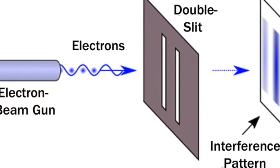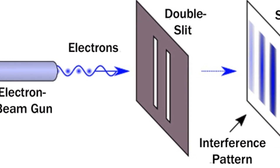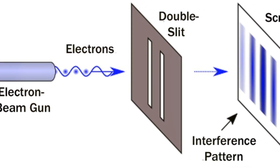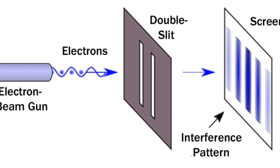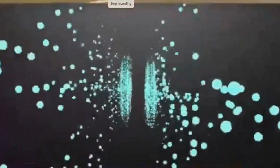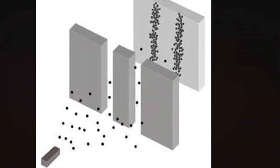The experiment itself is deceptively straightforward. Imagine a metal plate with two narrow slits, an electron gun poised to fire electrons through those slits one by one, and a screen ready to register each electron's arrival — a single dot for each electron. Over time, a pattern emerges. Now, if we were throwing tennis balls through two similar slits, we'd predict two clusters of marks,